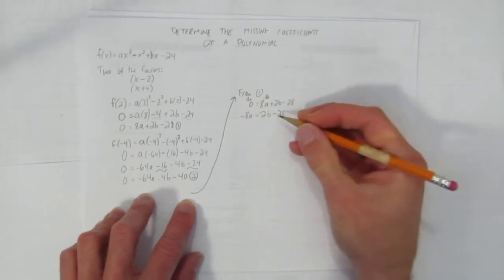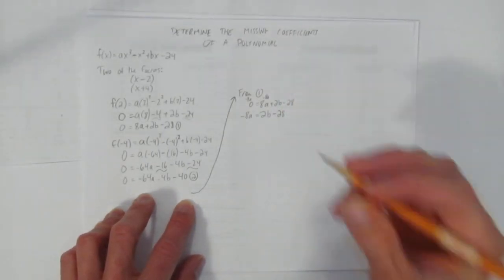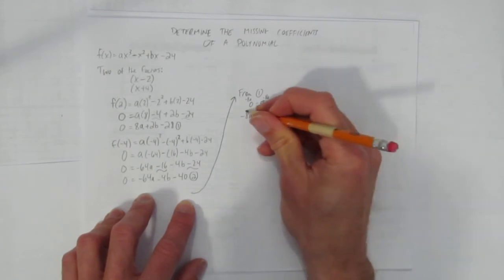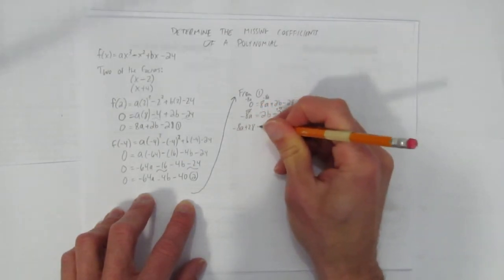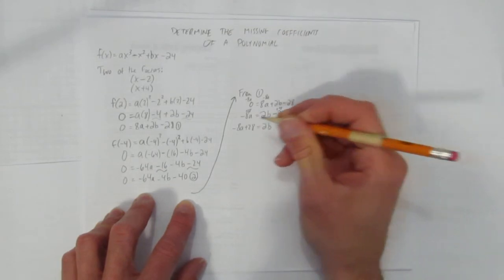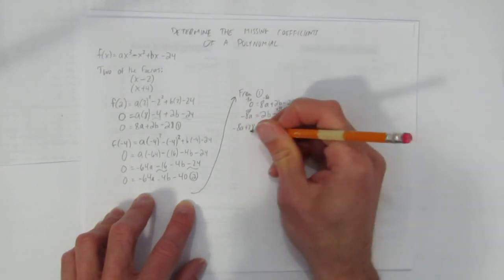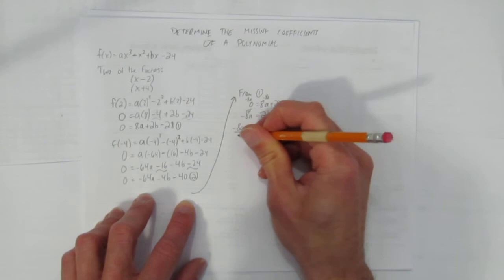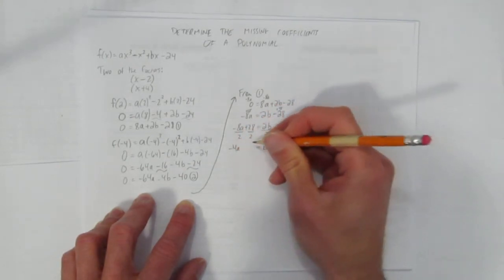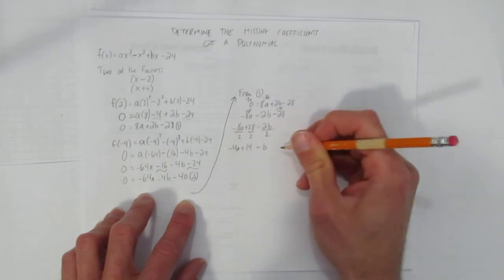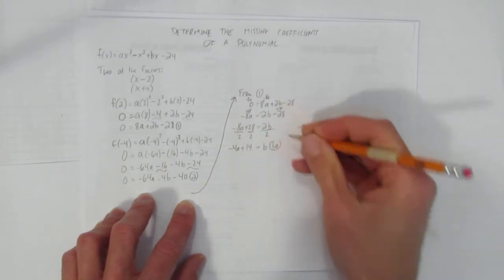You could have got the other letter by itself, but just the b looks easier because I won't have fractions. I'm going to add 28 both sides, and I get negative 8a plus 28 equals 2b. And now I'm going to divide everything by 2 to clear off that b. And so b is negative 4a plus 14. Let's call that 1a. It's equation 1, but adjusted.